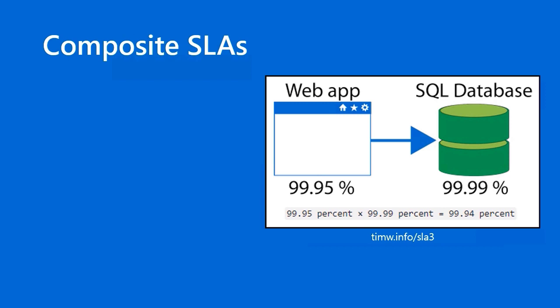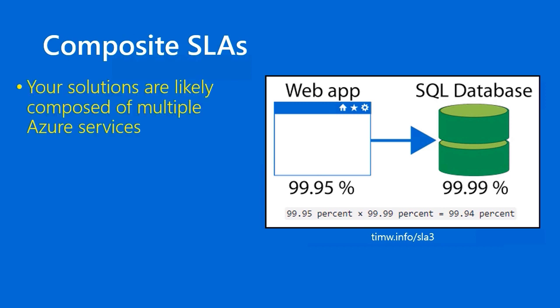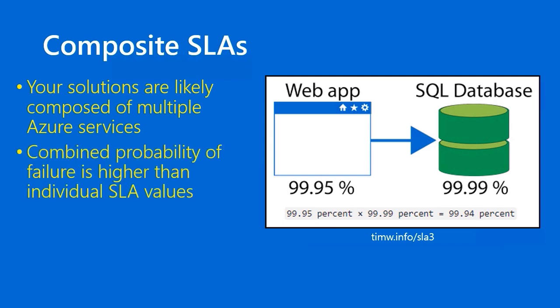A composite SLA is more real-world because your solutions in Azure are likely composed of multiple Azure services. For example, we have a web app running on Azure App Service, which generally has a 99.95% SLA, but the application also works with an Azure SQL database, which has four nines of SLA availability. To determine a composite SLA, you multiply the availabilities together: 99.95 times 99.99 gives you a composite SLA of 99.94%. The combined probability of failure is always higher than the individual SLA values.